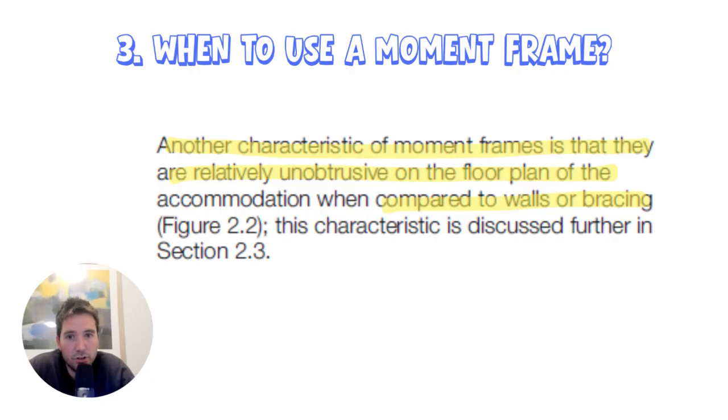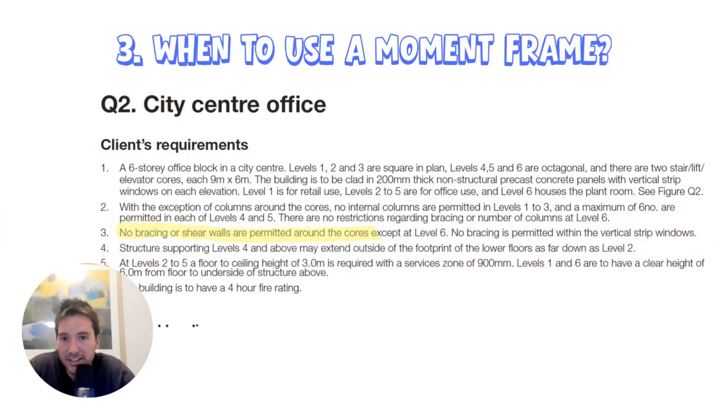So when should you use a moment frame? Essentially they come in really handy when you want unobstructed areas, so you'll see them pretty often in sporting facilities or large warehouses. You can't have bracing through a basketball court. If you're sitting the IStructE exam you often get prompted with a client requirement where they spell it out to you and they're saying there's no bracing or shear walls permitted around the cores. Cores are pretty typical spots to put shear walls, so when there's a client requirement restricting what lateral stability systems you can use, the moment resisting frame is a suitable lateral stability system.